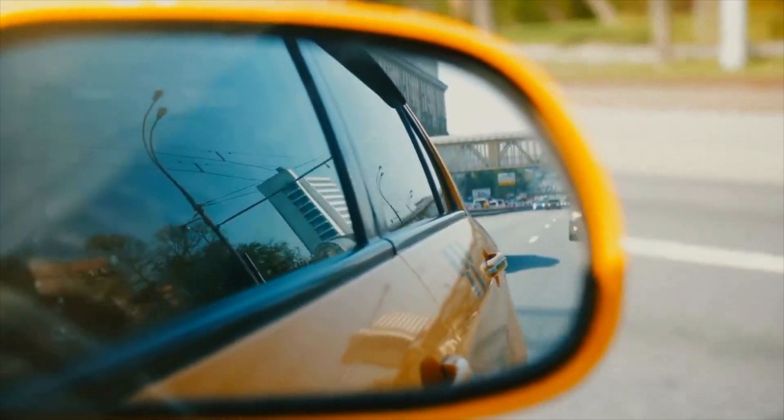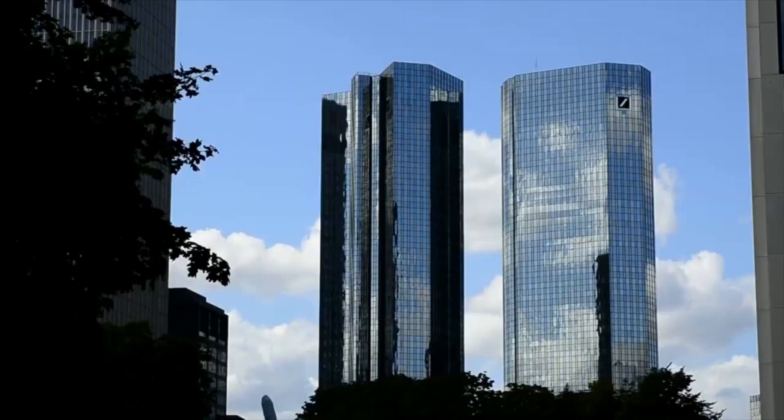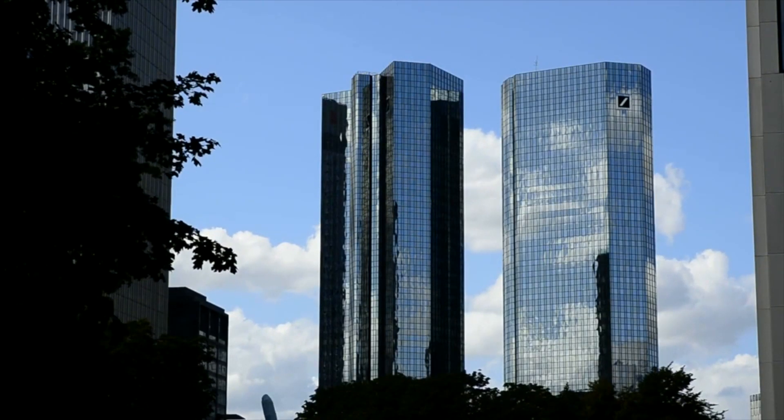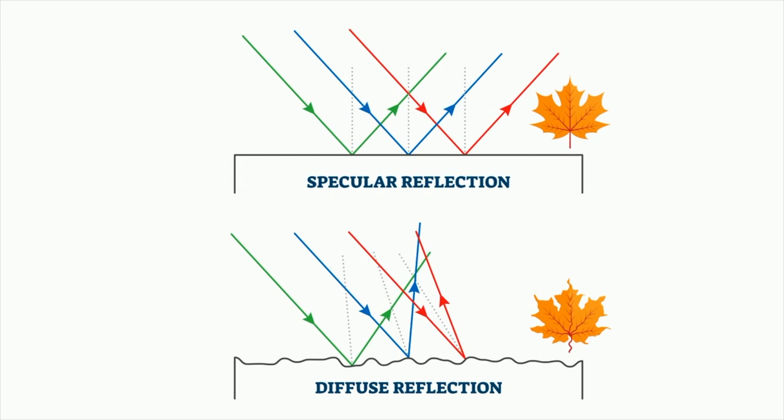What do all these objects have in common? They're all examples of the reflection of light. Welcome to MooMooMath and Science and the difference between specular reflection and diffuse reflection.